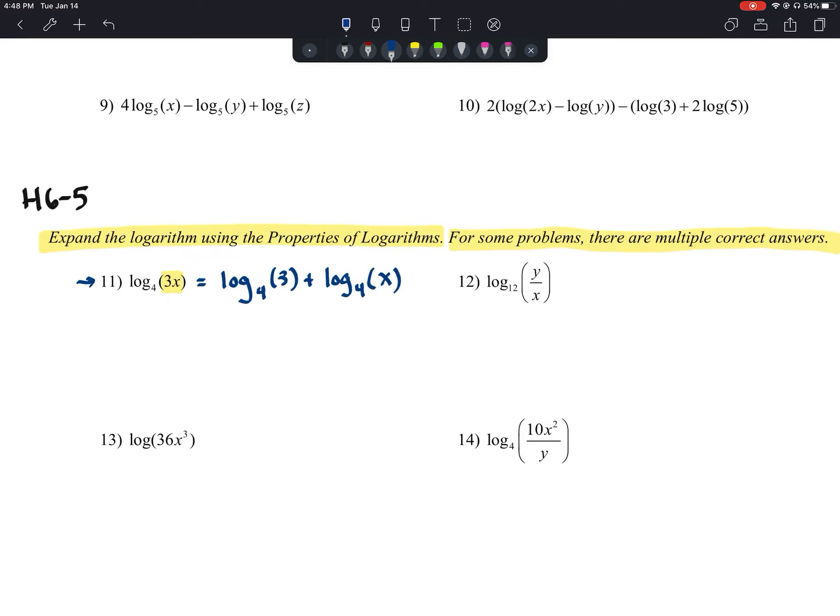When you think about the properties you've been doing in the previous section, numbers 1 through 10, whenever you had that product, it came from adding two logs together. So we're just taking it back to that.